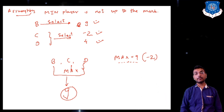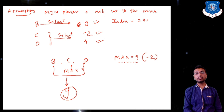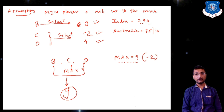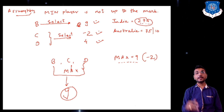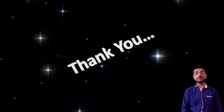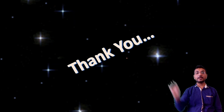For example, consider a cricket match where India scored 274 runs. If the opponent team Australia scores only 75 runs and gets all out, then India wins by a large margin simply because Australia did not play well. This is analogous to the Minimax Search Procedure scenario.